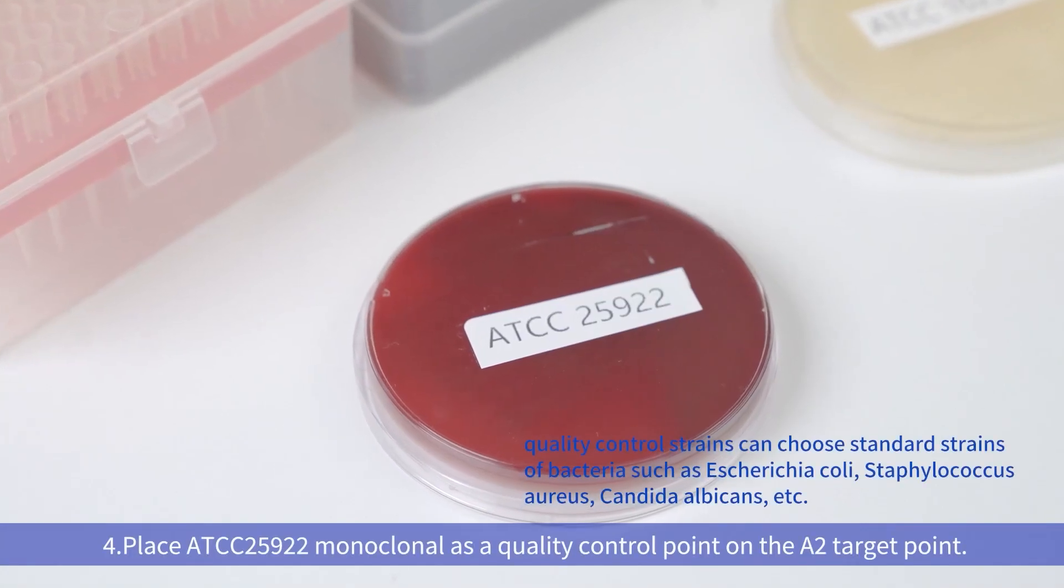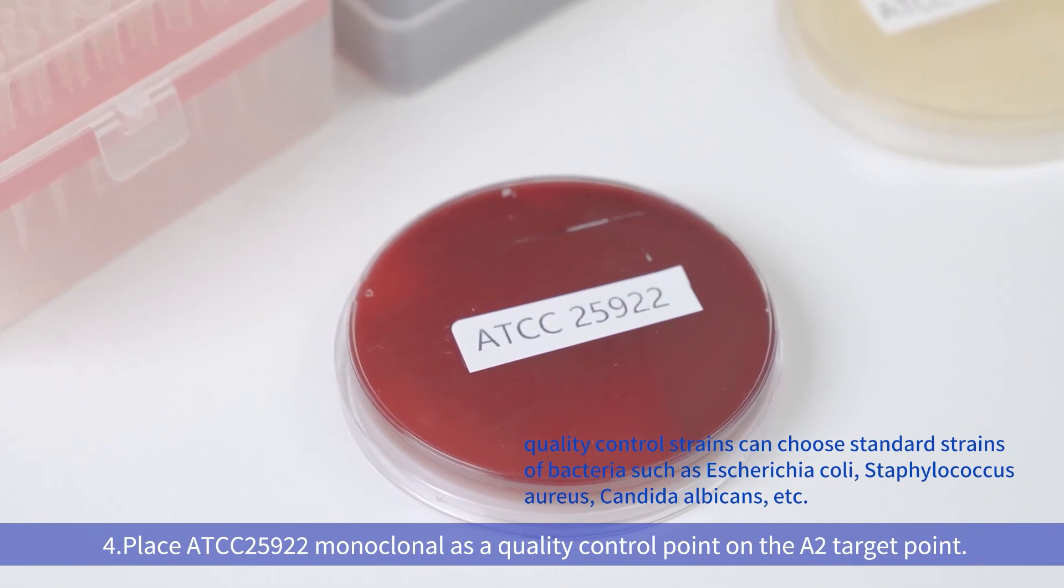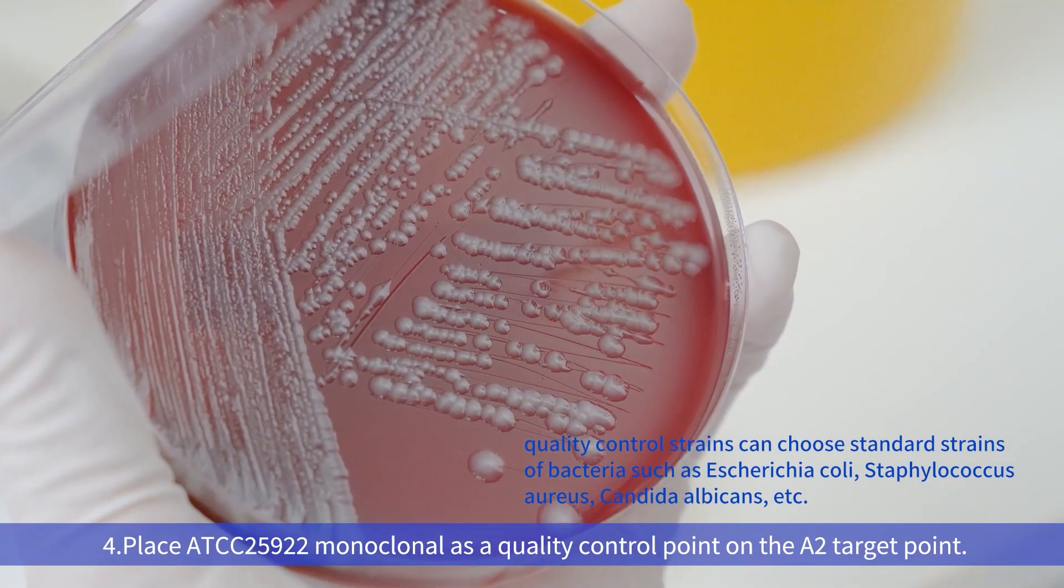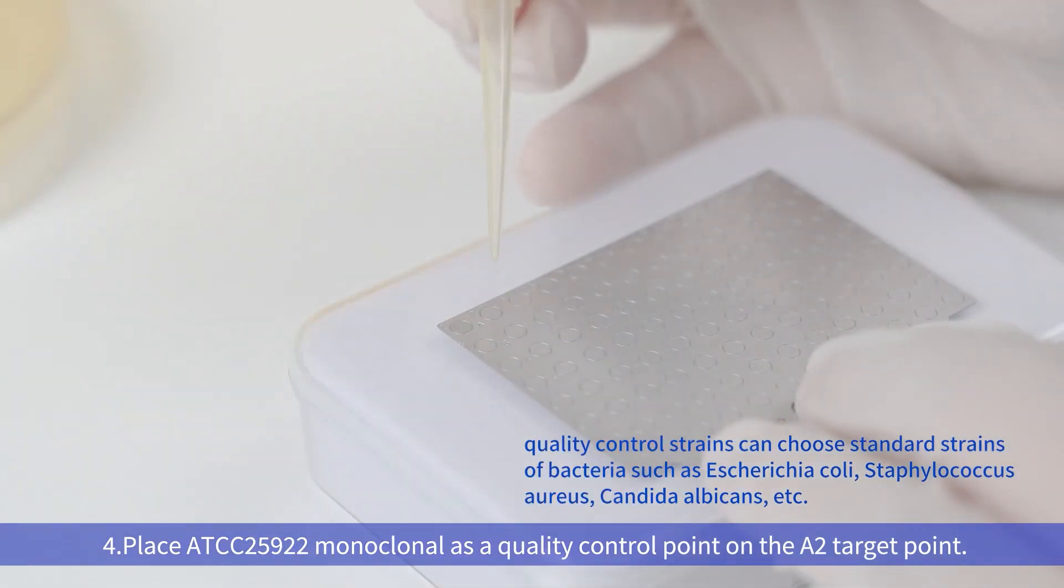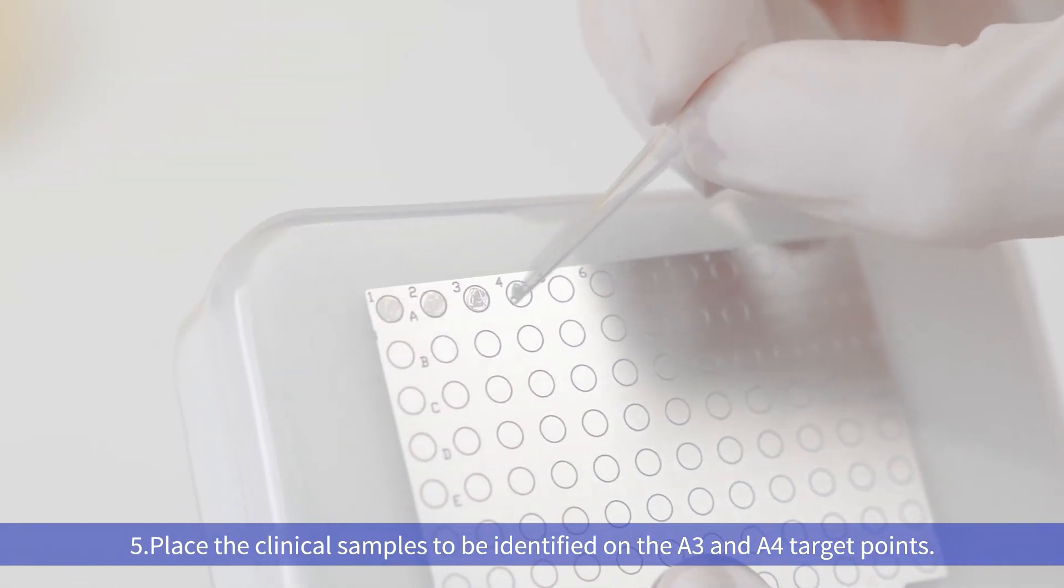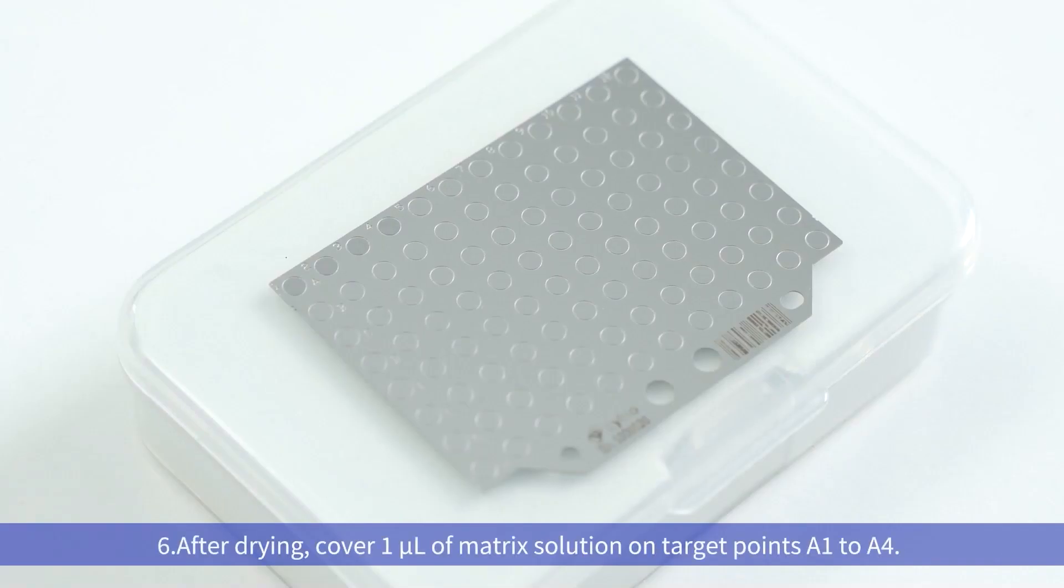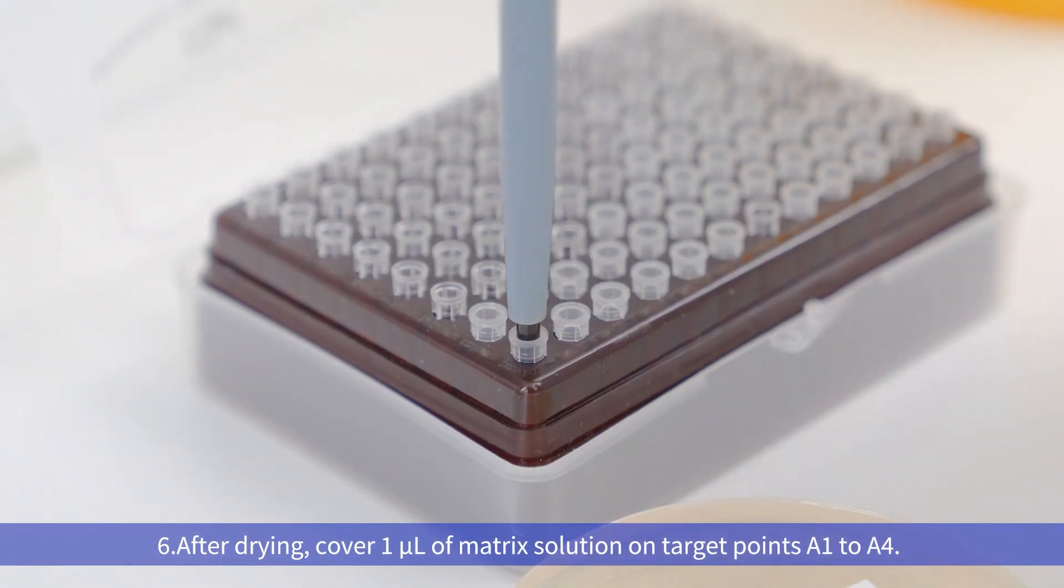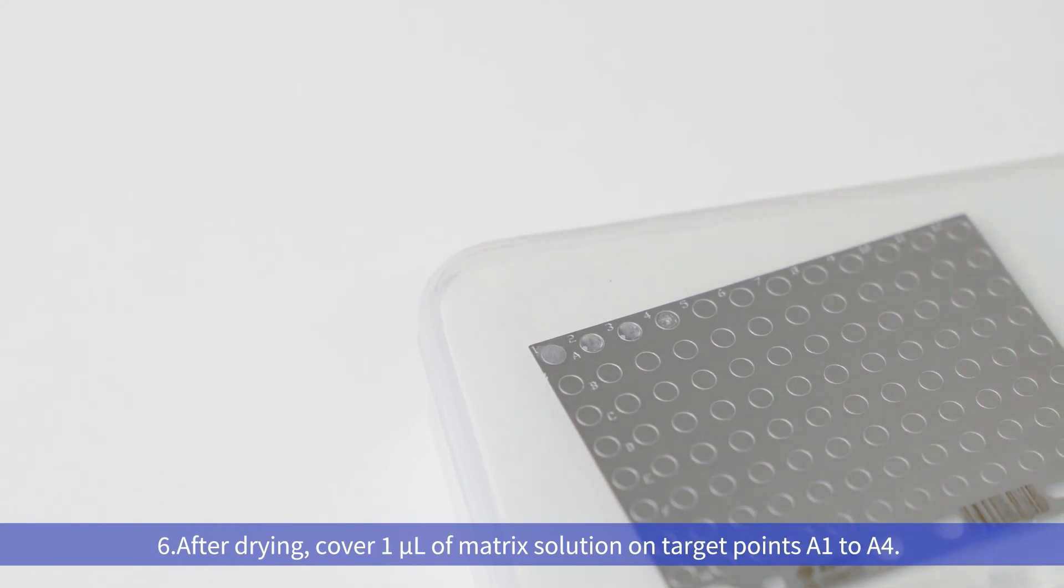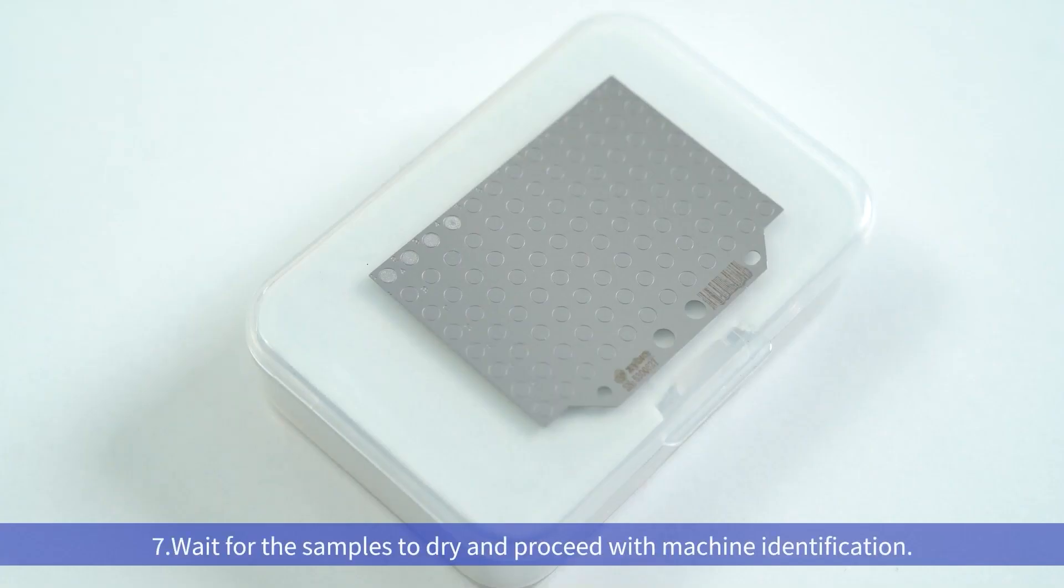Fourth, place ATCC 25922 monoclonal as a quality control point on the A2 target point. Fifth, after drying, cover 1 microliter of the matrix solution on target points A1 to A4. Seventh, wait for the samples to dry and proceed with machine identification.